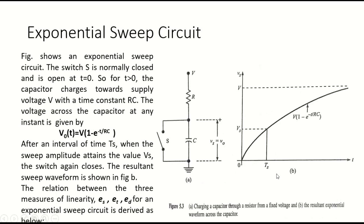The general form of the exponential equation — the voltage across the capacitor at any instant — is given by V0(t) = V × (1 − e^(−t/RC)). After the sweep interval TS, even though we find an exponential signal, if we take a very small part of it, it looks approximately linear — not exactly linear, but approximately a linear sweep signal.